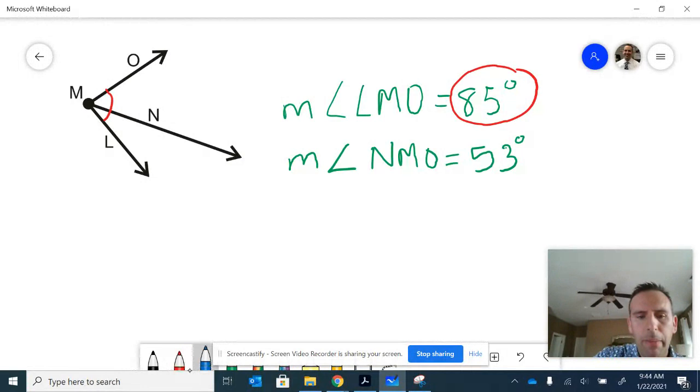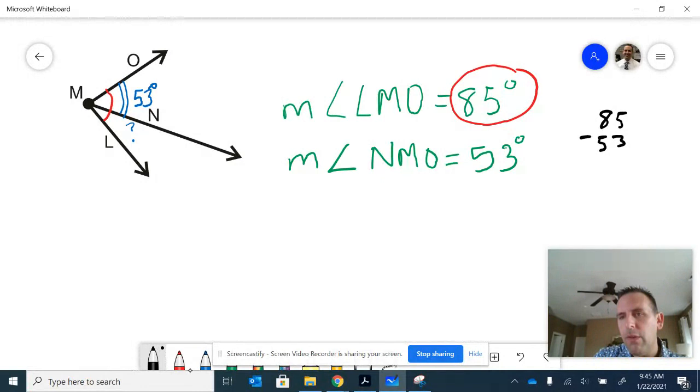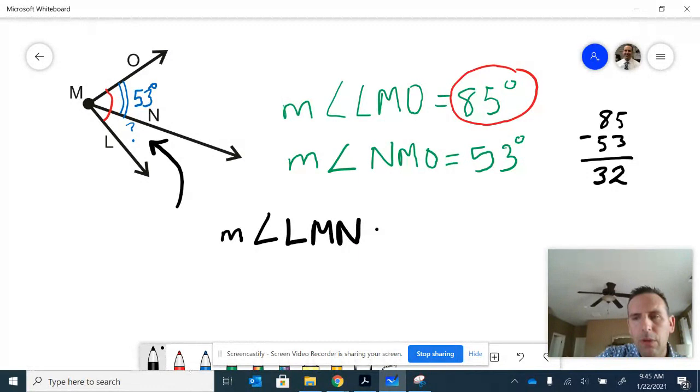Well, if this angle is 53 degrees, what would this angle down here need to be so that the total sum would be 85? Easy way to think about that: if you use subtraction, 85 subtract 53 would be 32. So it would be true that this angle here, the measure of angle LMN, would be equivalent to 32 degrees. That's true because 32 plus 53 equals 85.